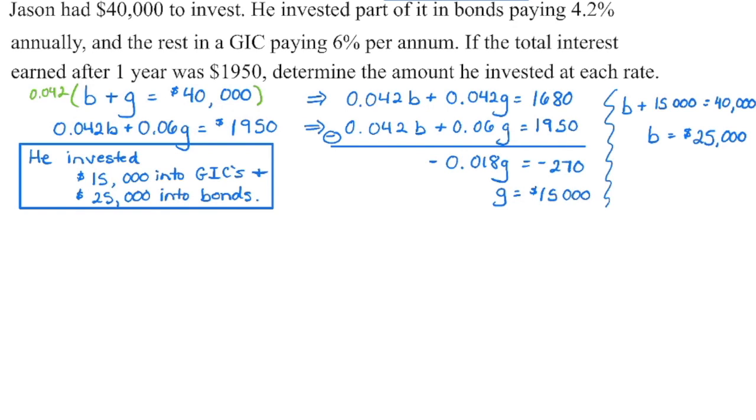Now this looks like the easiest equation to substitute into. So I'm going to take that equation now. And knowing that G is $15,000, we can subtract that from $40,000 to get the value of B. And then make sure you answer the question with the appropriate units. So because we're dealing with money, we've got a dollar sign in the front here. So this much money into GICs, and this much money into bonds.